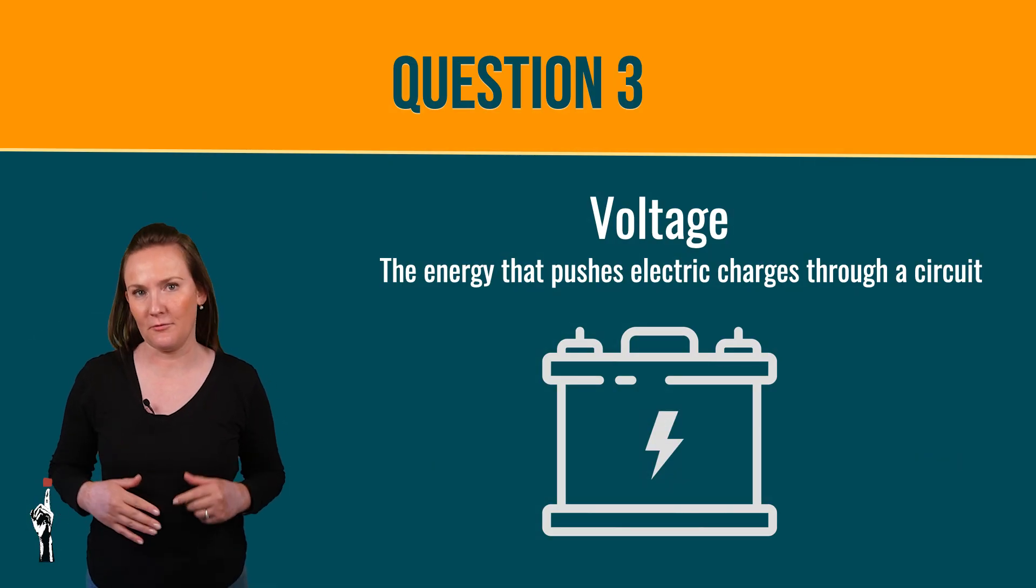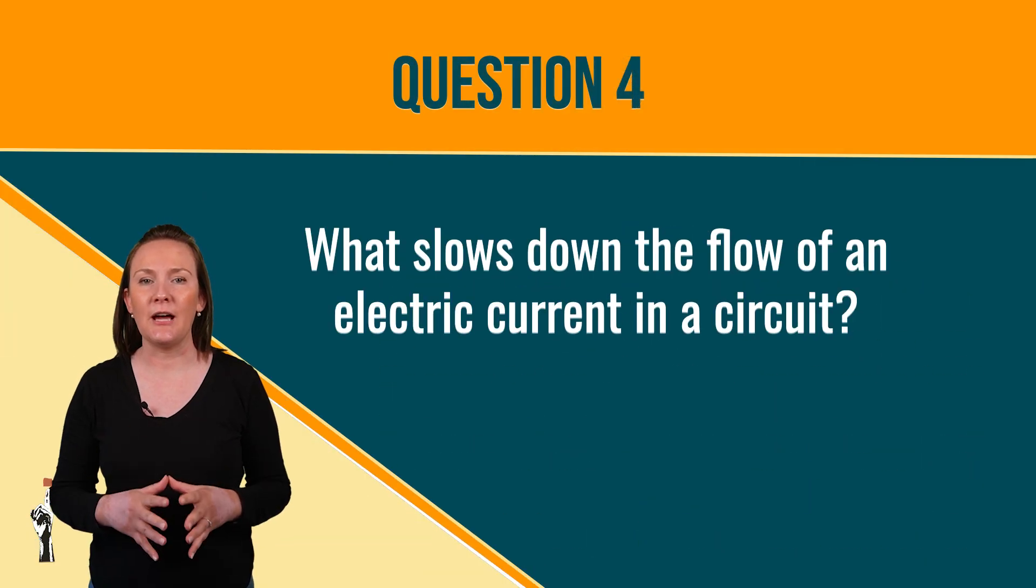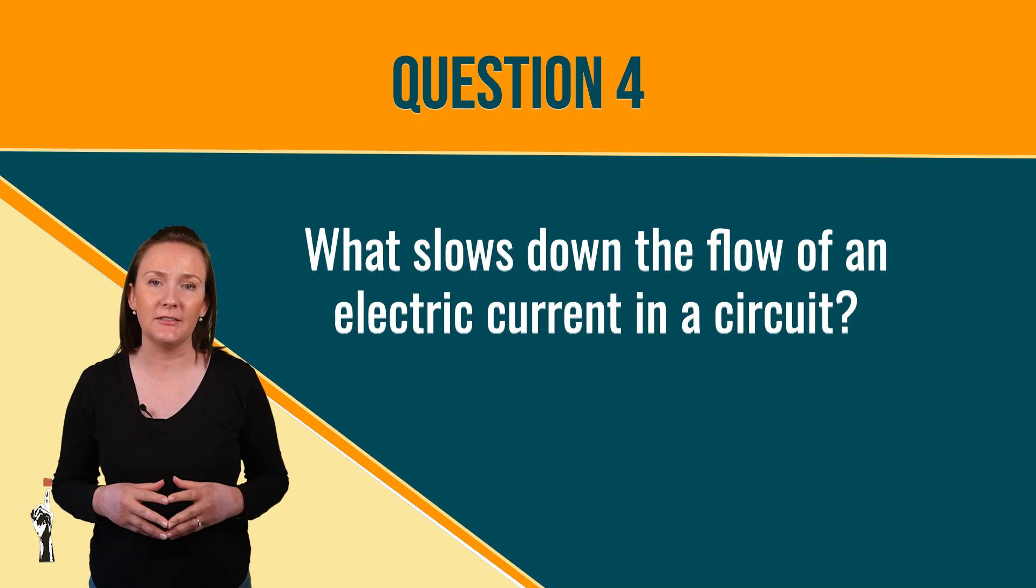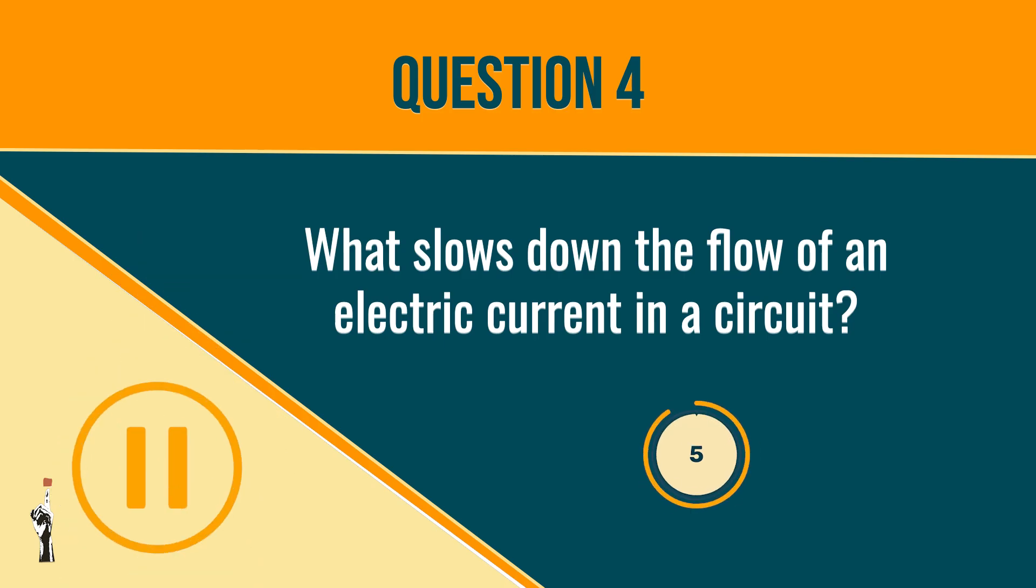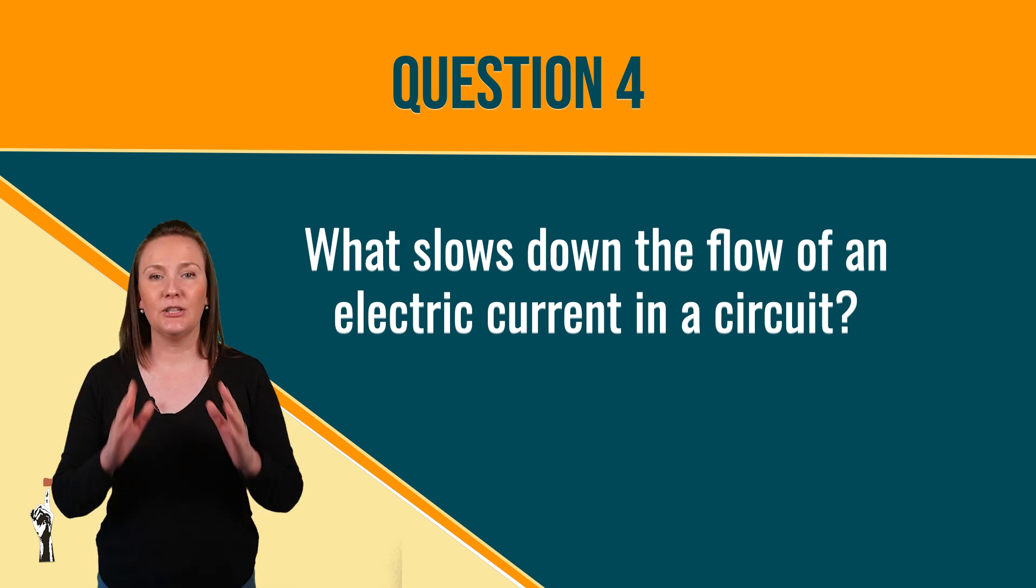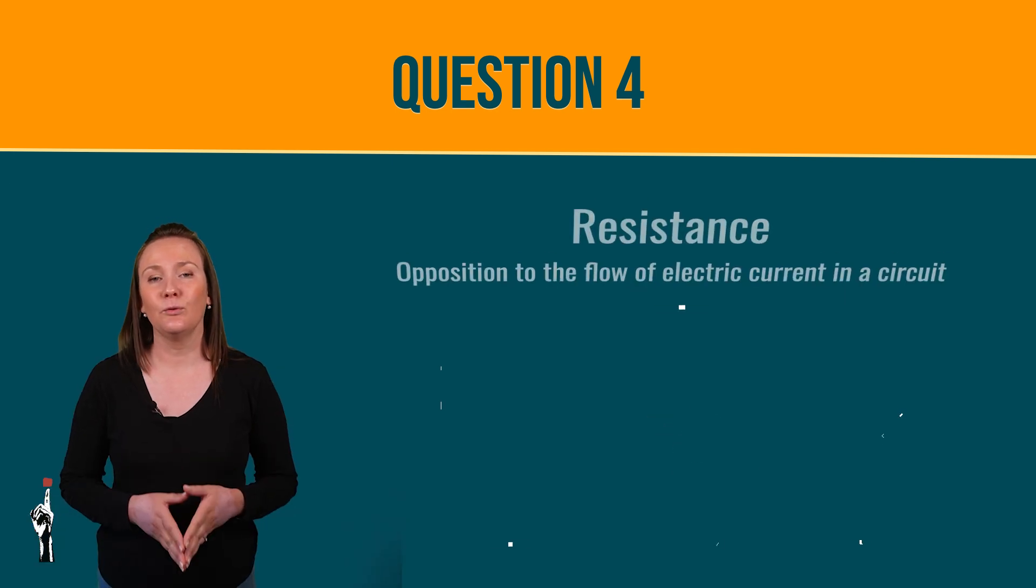Now for our last question. What slows down the flow of an electric current in a circuit? Good job. The final answer is called resistance.